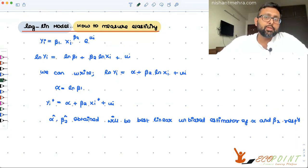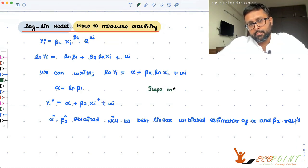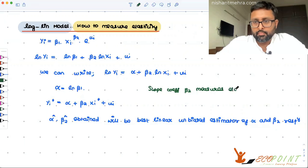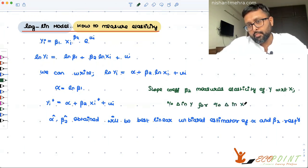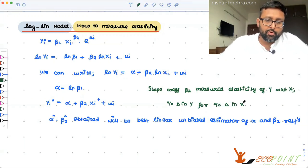That is what your elasticity also measures. You remember price elasticity of demand? Percentage change in demand due to percentage change in price. So slope coefficient beta 2 measures elasticity of y with respect to x. That is percentage change in y for percentage change in x.